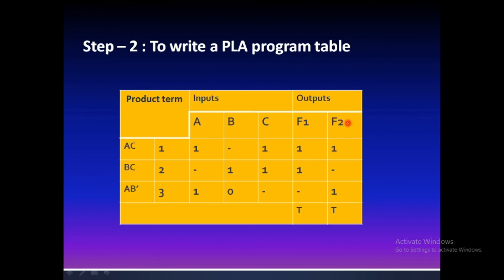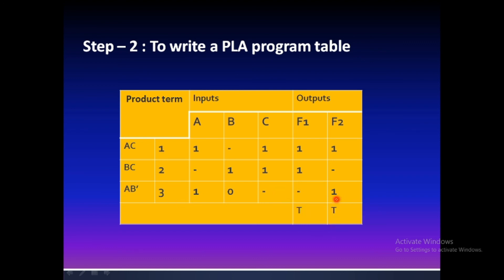For the second product term BC, I write a 1 across B and a 1 across C. Since BC falls under function F1, I write a 1 under F1. For the third product term AB̄, A gets a 1 and B gets a 0, since B̄ is the complement — that is, 0 under B. This term falls under function F2, so I write a 1 there. Both columns are filled according to the product terms with values 1 and 0 specifying the conditions.